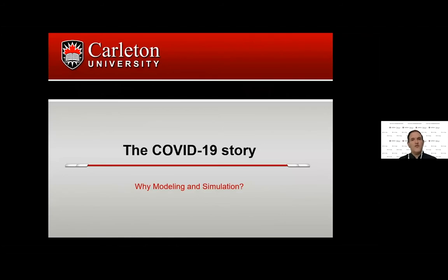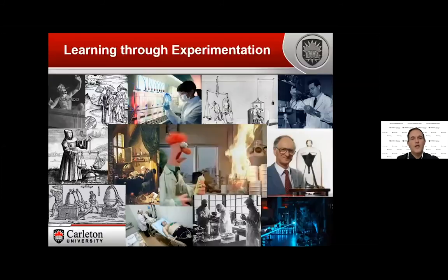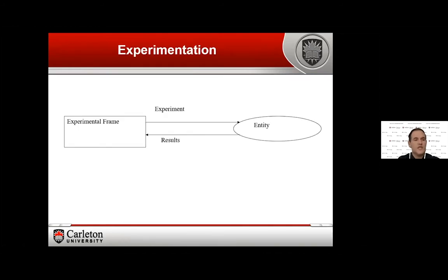Let's talk about the COVID-19 story and why modeling and simulation is so important. We learn about the world around us through experimentation — we have thousands of years of learning through this process. We still do this in the COVID scenario: we have to conduct experiments to know about the disease and how it spreads. We can try to formalize this experimentation process. We have an entity — it's a virus — and we conduct experiments on it, try to attack it with different medications, put it in petri dishes, and see what happens. We call that the experimental frame. If we are lucky, we find a cure.